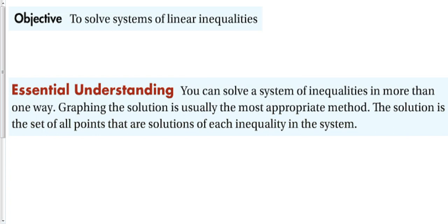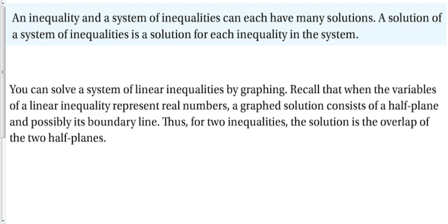When you're talking about a real-world situation where you can only have one, two, or three of something, a table is usually the best method. But today we're going to look mostly at graphing. The solution is the set of all points that are solutions to each inequality of the system, meaning we're going to have more than one answer — the answer is every point in a particular region.